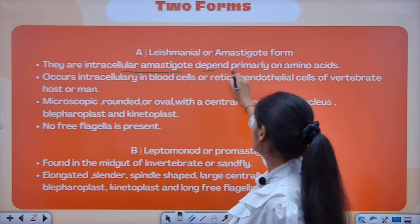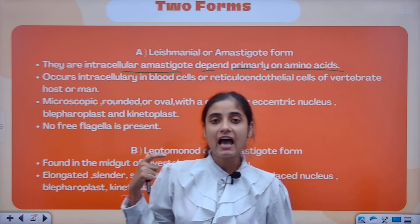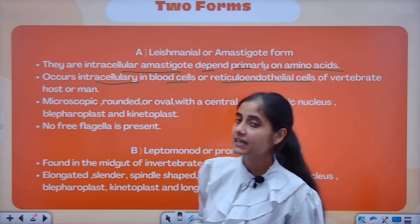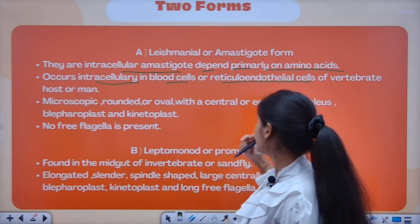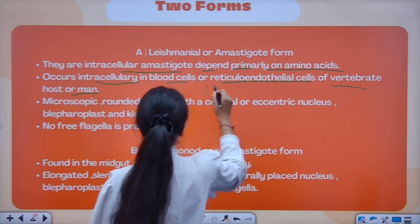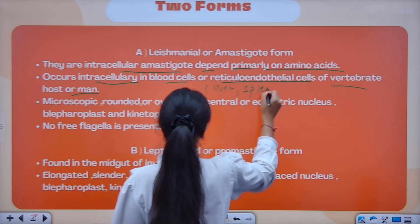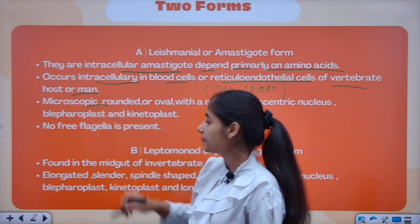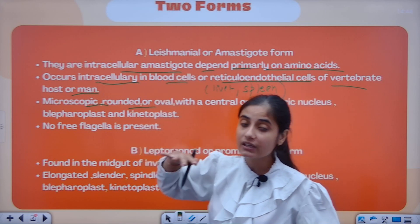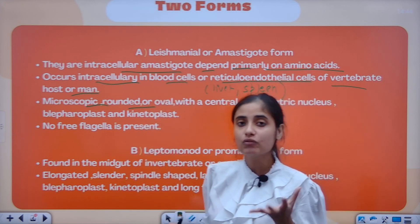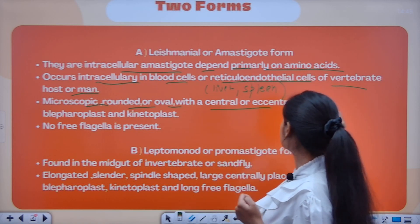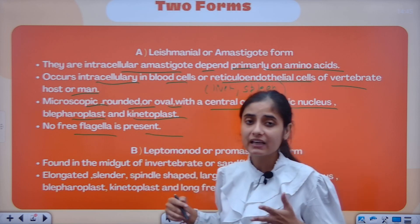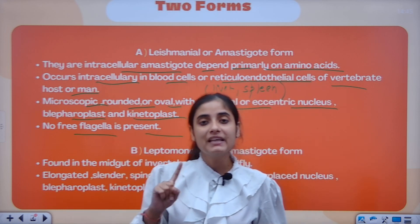They are intracellular Amastigotes that depend primarily on amino acids. In the human cycle, they are phagocytized by reticuloendothelial cells — the intracellular cells — in the blood cells, liver, and spleen. The Amastigote form is rounded or oval shaped, with a central and eccentric nucleus. Blepharoplast and kinetoplast are present. There is no flagella in the vertebrate form, even though Leishmania is uniflagellate overall.